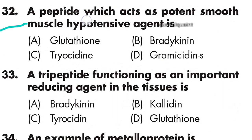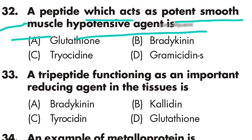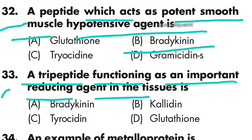Question 32: A peptide which acts as a potent smooth muscle hypotensive agent is — option B is right — bradykinin. Question 33: A tripeptide functioning as an important reducing agent in tissue is — option D is right — glutathione.